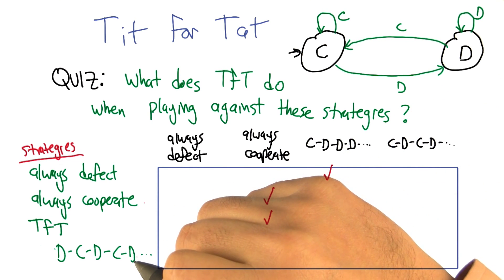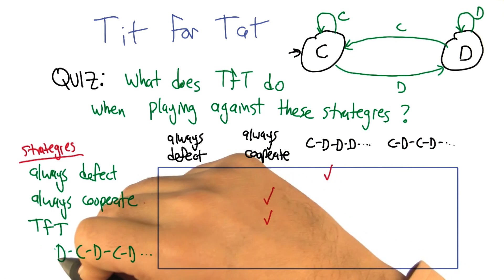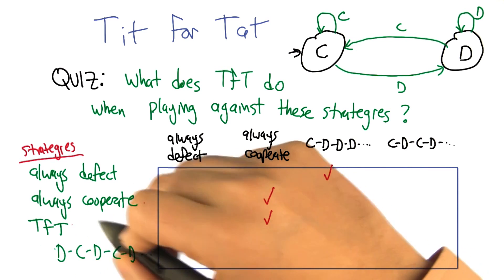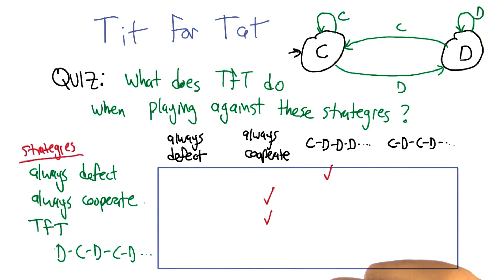All right. So what if it plays against something that is a little unsure of itself? So it starts off defecting, then cooperating, then defecting. It's sort of almost an anti kind of thing, right? So this is when it starts off with a defect. Right. So first thing I do is cooperate. And then after that, effectively, I do what the opponent does one step before.